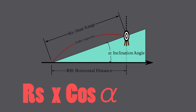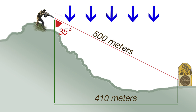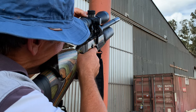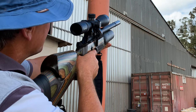This effectively gives you the horizontal range to your target, and with that you can reference the horizontal range to your drop charts and dial for that number. Most of you have probably heard of this rule before, but there's one big problem: the rifleman's rule doesn't always work very well. Let's look at some examples.